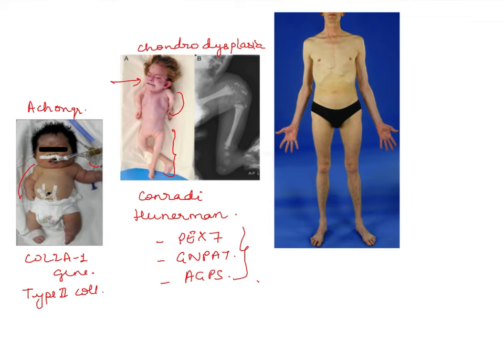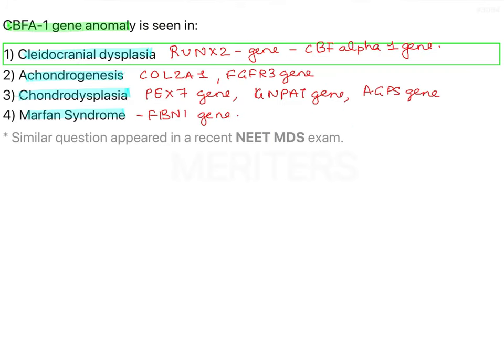Finally, Marfan syndrome is characterized by tall build, abnormally long hands, feet, and legs, flexible and hyperextensible joints, scoliosis, a chest that sinks in, crowded teeth, and flat feet. It is caused by a mutation in the FBN1 gene. To summarize, the question asks about the CBF A1 gene, and the correct answer is cleidocranial dysplasia.